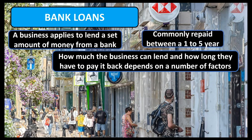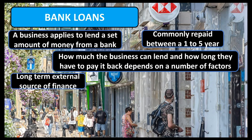Bank loans are commonly agreed and repaid over a 1 to 5 year period, but can be longer if both parties agree. Therefore it is classed as a medium to long term external source of finance.